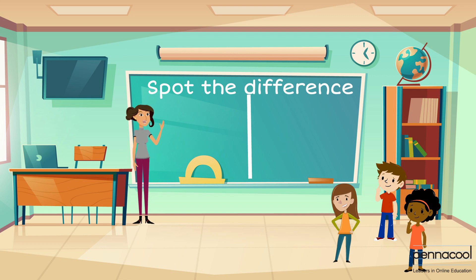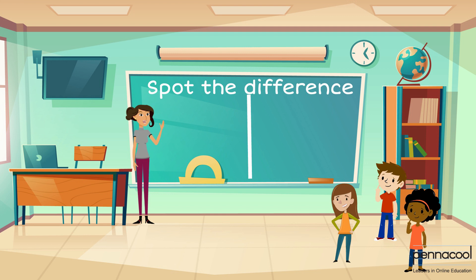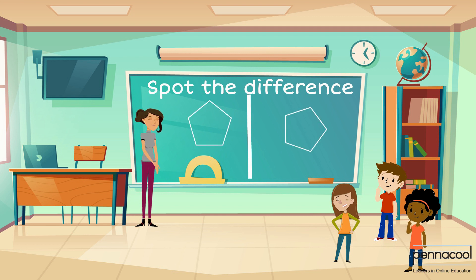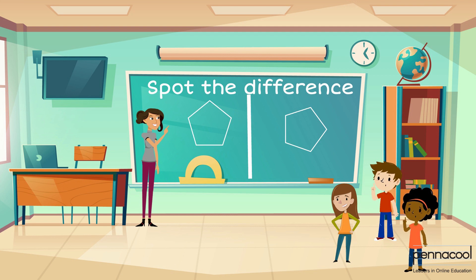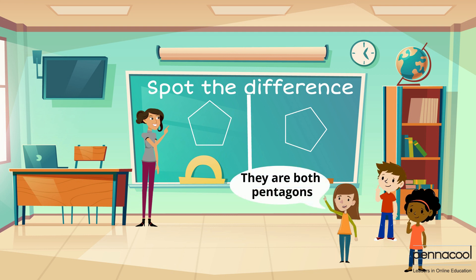For the first round of the game, the teacher showed two pentagons. Both shapes had five sides of the same length. Samantha correctly answers that they are the same shape.